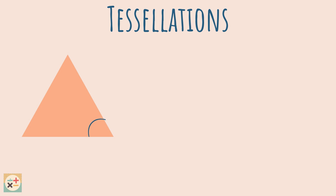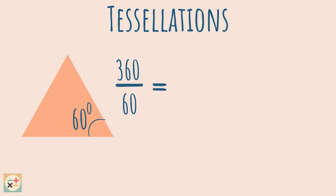Let's look at an example. Here we have an equilateral triangle with interior angles of 60 degrees. To find out if this shape tessellates, we divide 360 by 60. This gives us a whole number and tells us that this shape tessellates, as there will be no gaps in the pattern.